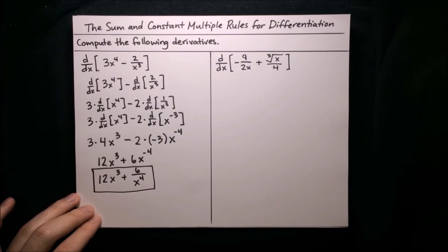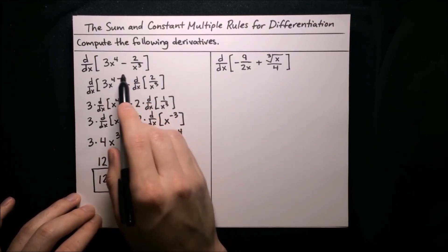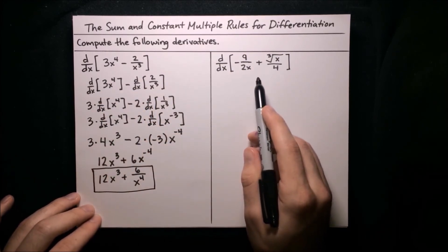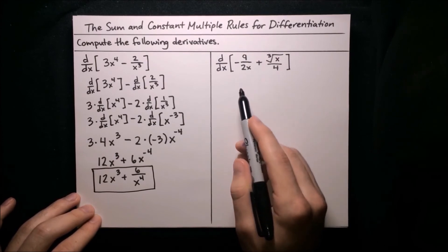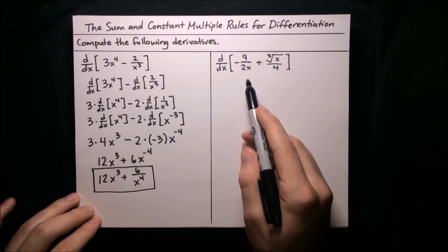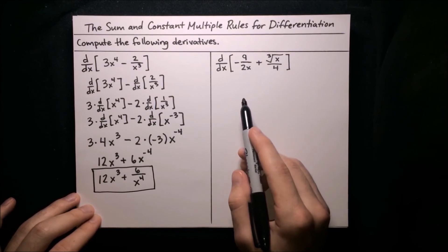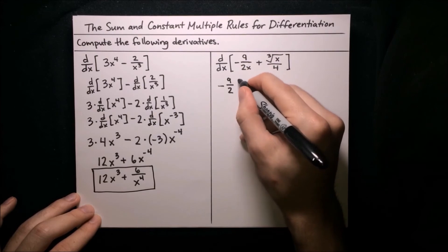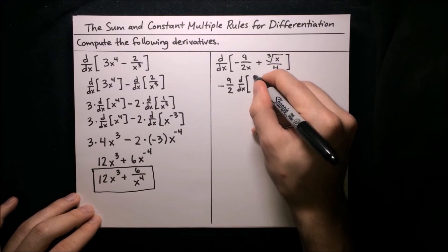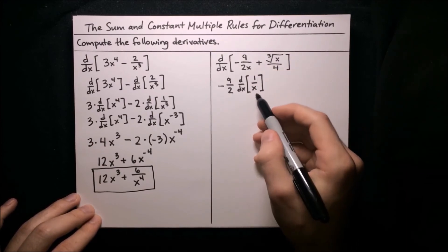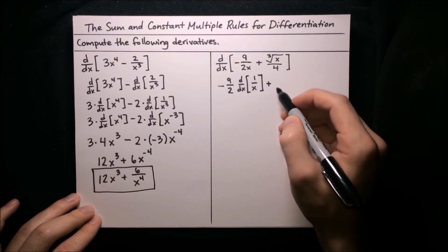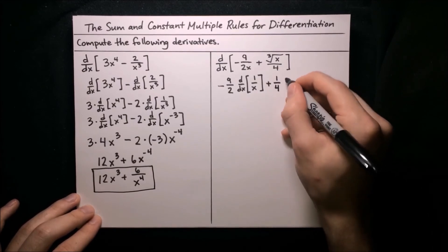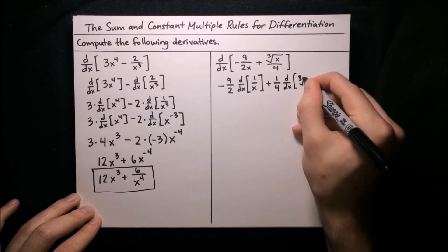We can speed things up by combining the sum rule and constant multiple rule into a single step — splitting the derivative over each term and factoring out each coefficient at once. For the next problem, the coefficient on the first term negative 9 over 2x is negative 9 halves, so we pull that out: negative 9 halves times the derivative of 1 over x. Then plus: the coefficient on cube root of x over 4 is 1 fourth, so 1 fourth times the derivative of cube root of x.